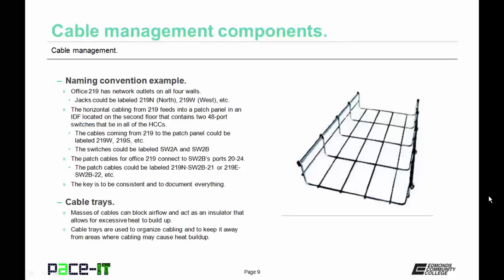Finally, there are cable trays. Masses of cables can block airflow and act as an insulator that allows for excessive heat to build up. Cable trays are used to organize cabling and to keep it away from areas where cabling may cause heat to build up. Cable trays keep bundles of cables neat and fairly well organized.